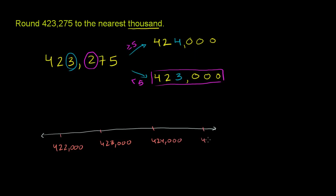And then maybe over here you have 425,000, and you could keep going. Now, 423,275 is going to be someplace right around here. And so when we round to the nearest thousand, we have to pick between that and that. And we see it is much closer to 423,000 than to 424,000. So we round it right there.